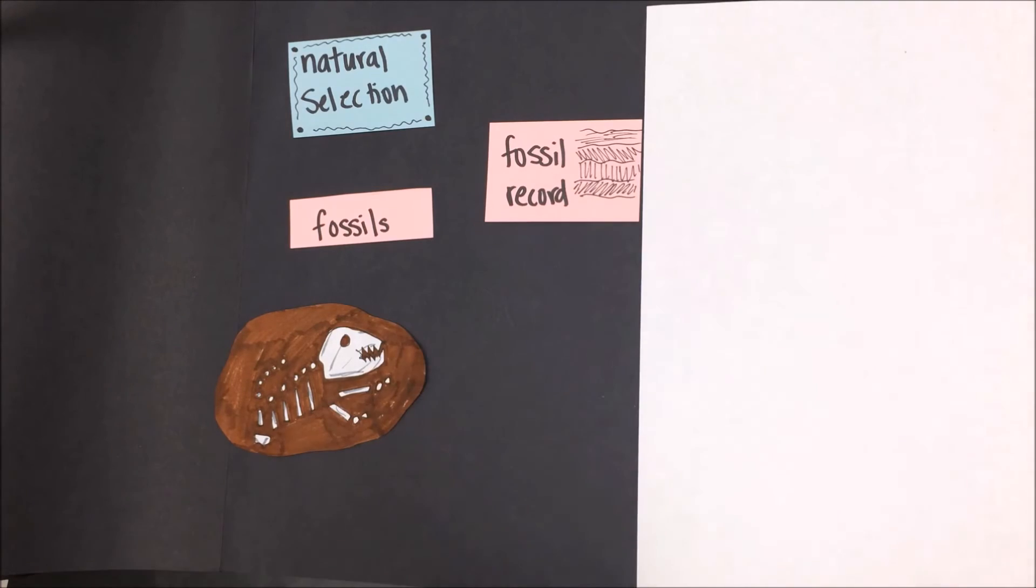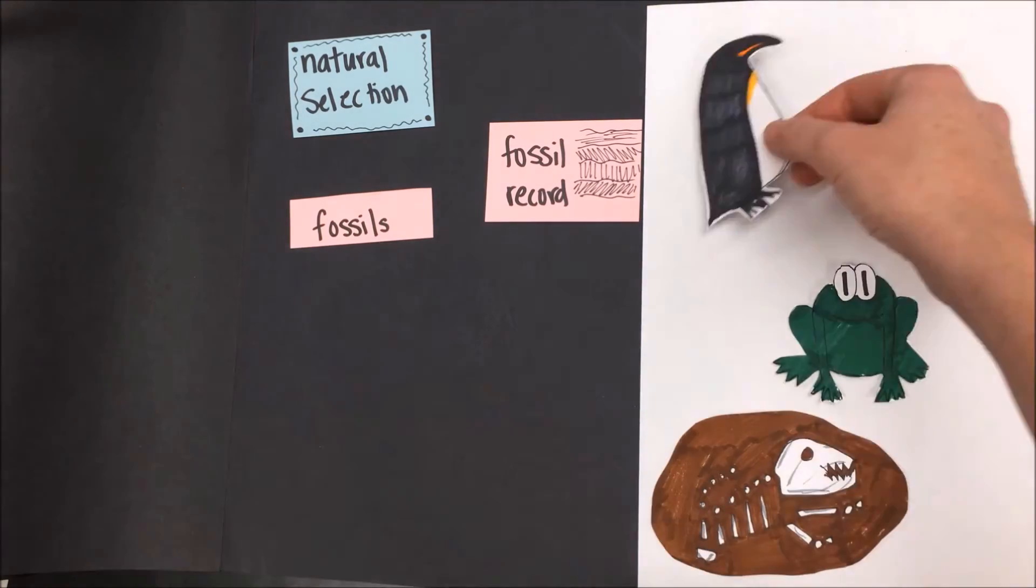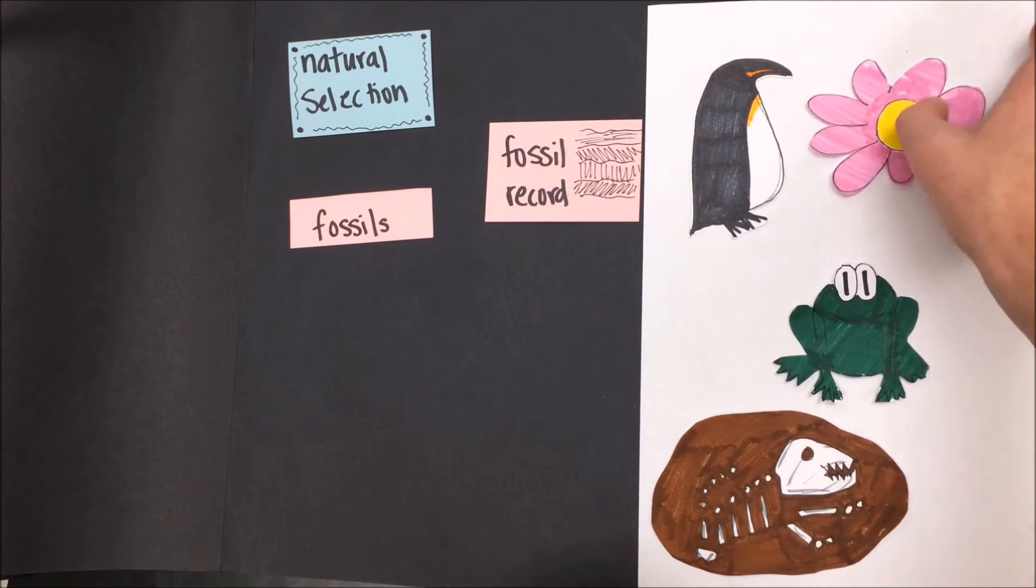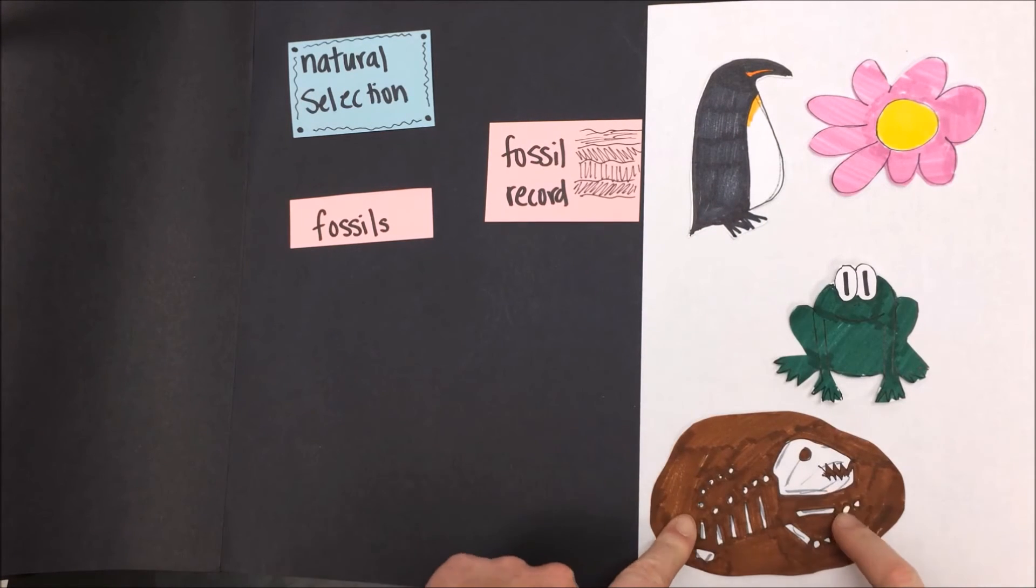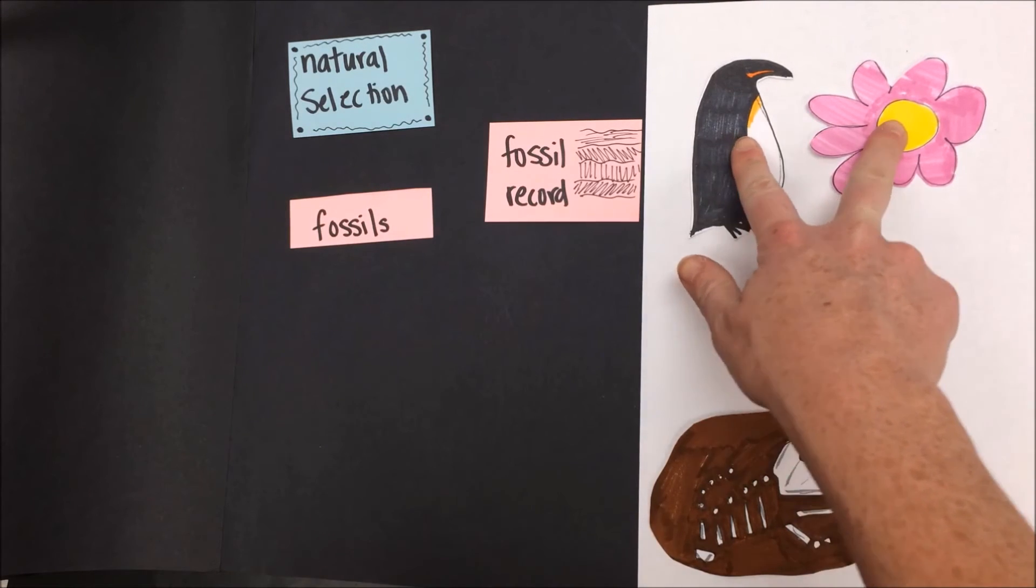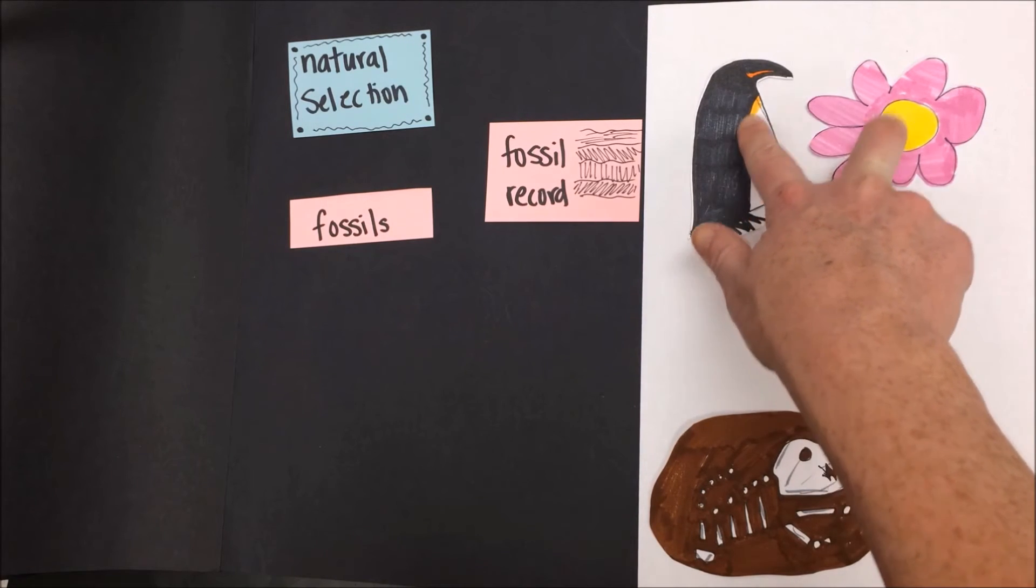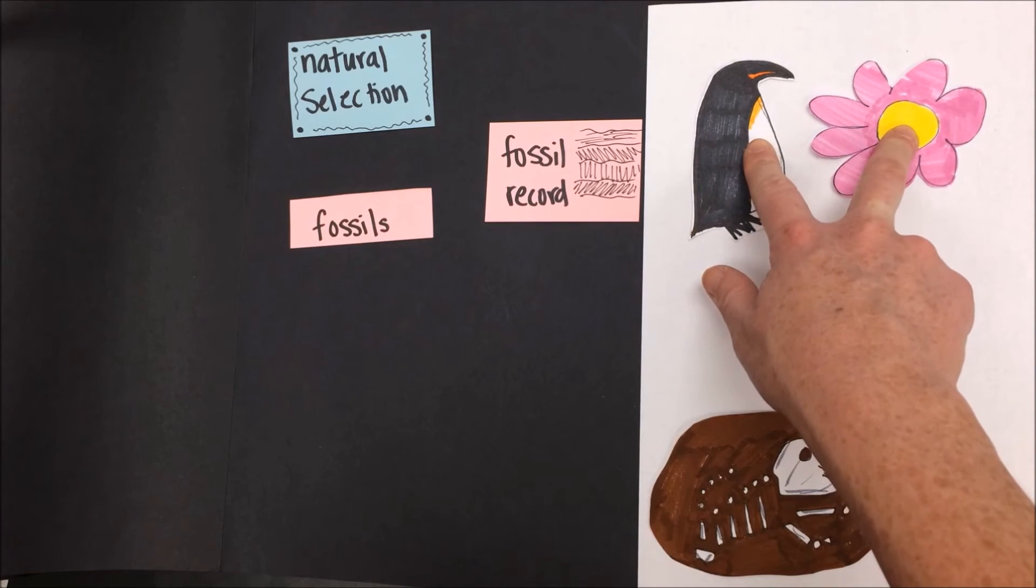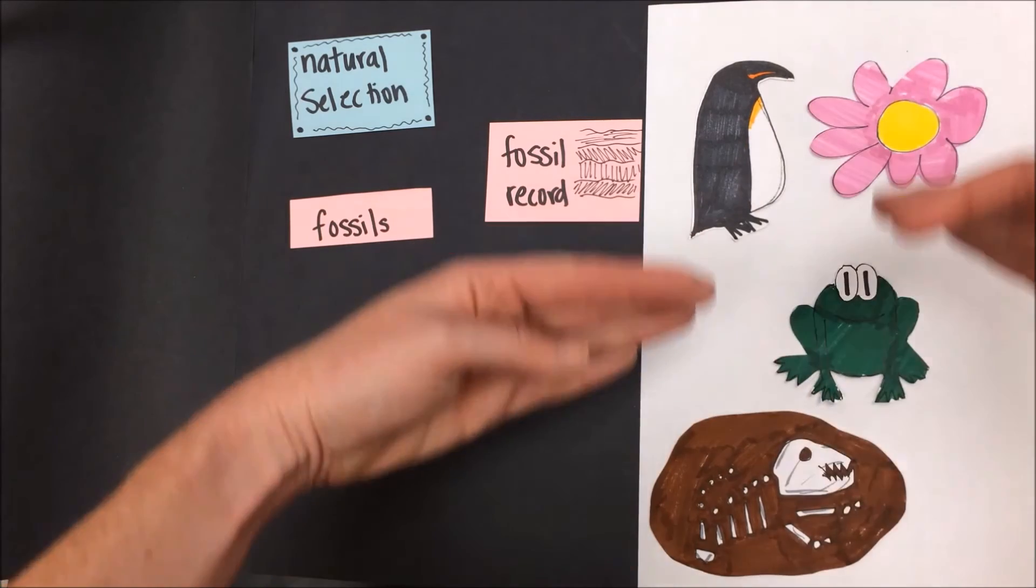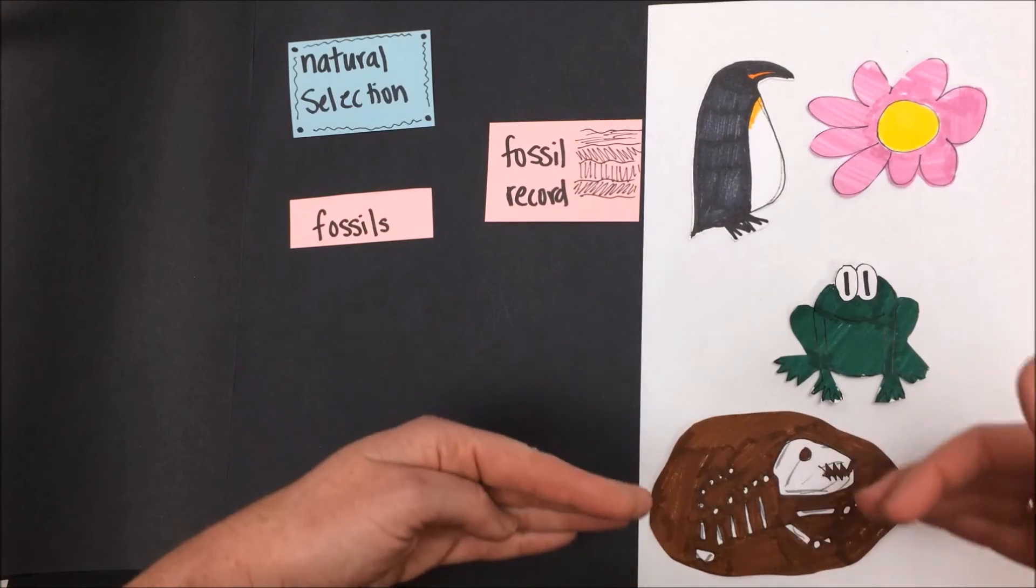If we imagine that this is our rock layer, and we find this fossil, and then this fossil, and then this fossil, and this fossil, this would suggest that the bottom fossil is the oldest. It would also suggest that the next species to come on the scene would be this one. Because the flower and the penguin are fossilized at the same time, it suggests that they were on earth existing at the same time. Once again, the lower something is in the fossil record, or the layer of rock on earth, the older it is.